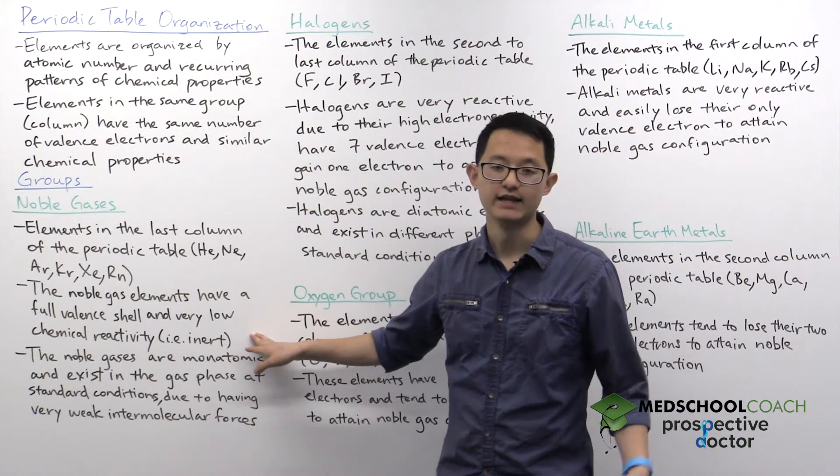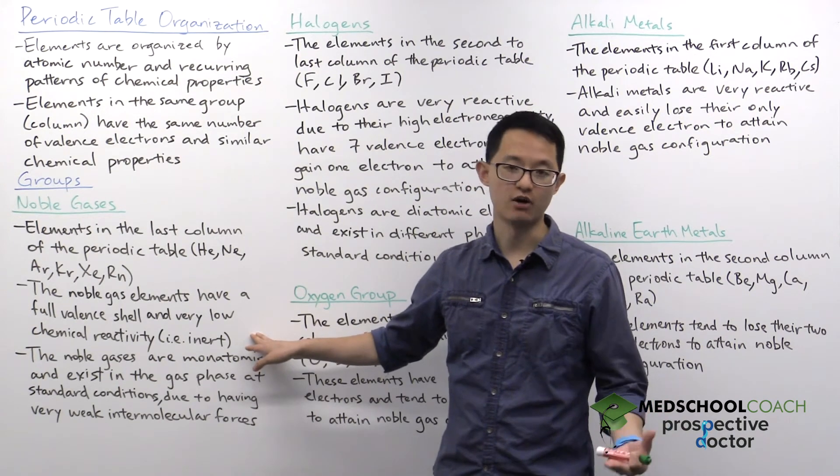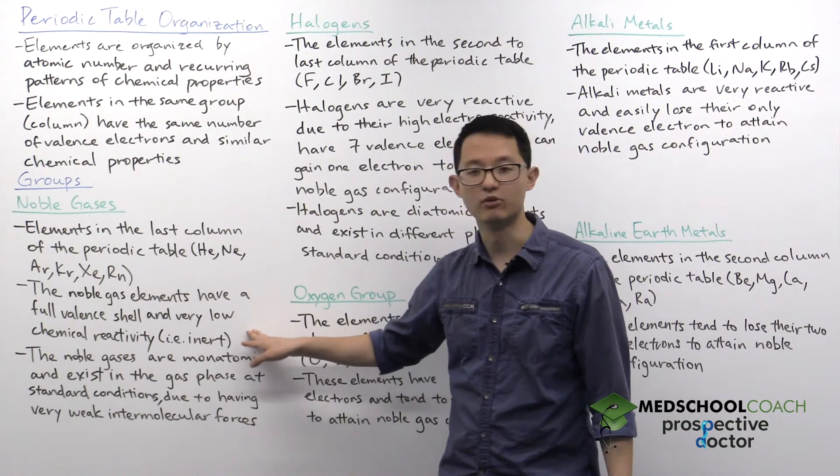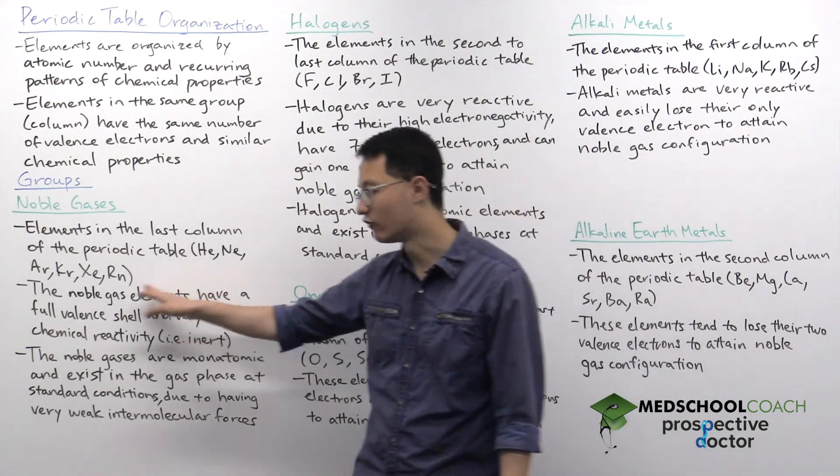And also because the fact that they're so stable and everything in the world is trying to become more stable, we'll often see that the way that different atoms and compounds react is essentially to attain noble gas configuration, a full valence shell.